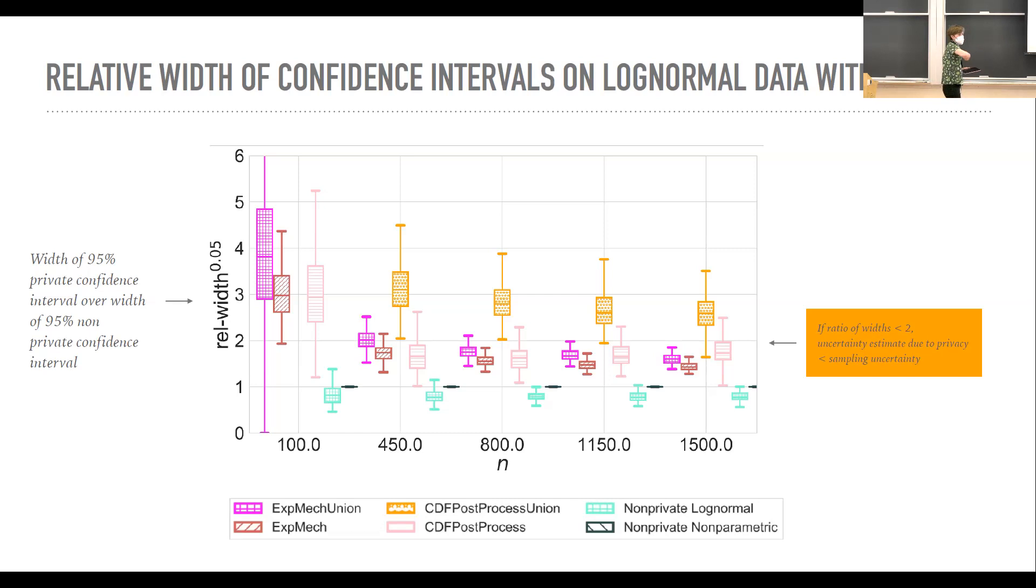So that one, that's just your non-private confidence interval, non-parametric confidence interval. We also in turquoise have the parametric confidence interval for log normal data. But again, we've shown that maybe that's not a good assumption to make a lot of the time.